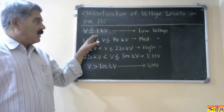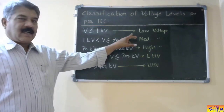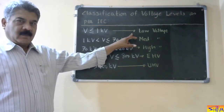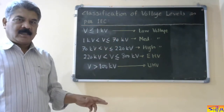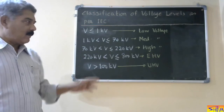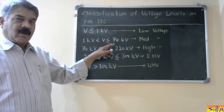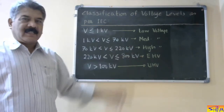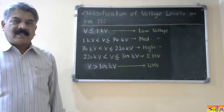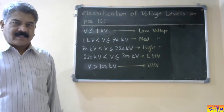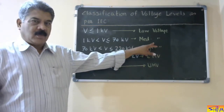If the voltage level is less than or equal to 1 kV, it is called low voltage. More than 1 kV but less than or equal to 70 kV is called medium voltage. Lines of 11 kV, 33 kV, and 66 kV all come under this category — medium voltage lines.